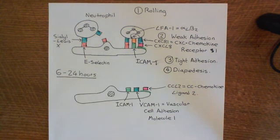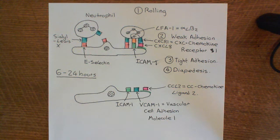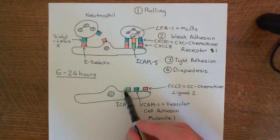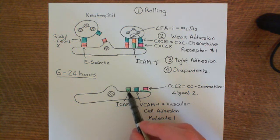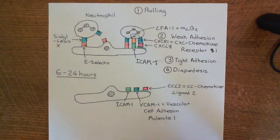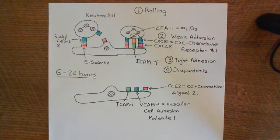After around 6 to 24 hours, the type 2 activation evolves: you stop expressing more E-selectin and start expressing more ICAM-1, or intercellular adhesion molecule 1, which was already expressed constitutively on endothelial cells but is now up-regulated. We're also going to start expressing VCAM-1, vascular cell adhesion molecule 1, and another chemokine, CCL2, the CC chemokine ligand 2.